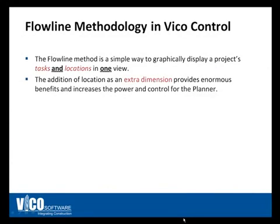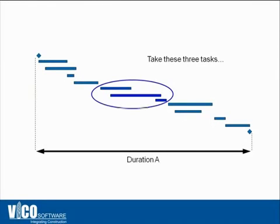Line of balance really means the ability to graphically display tasks and locations in one simple view, as opposed to just an activity-based schedule where locations aren't represented automatically. Having locations added as an additional dimension provides a lot of benefit — it increases the planner's control, creates a deeper understanding of the relationship between tasks, and allows the planner to see what's going on in the schedule at a glance rather than spending time investigating multiple pages of printouts.